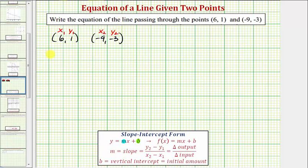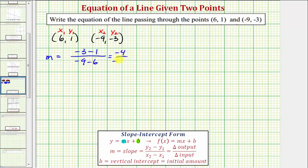Therefore, the slope of the line passing through these two points is going to be equal to the change of y divided by the change of x, or in this case, negative three minus one, divided by negative nine minus six. So simplifying, we have negative four divided by negative fifteen, but a negative divided by a negative is equal to a positive, so we know the slope is equal to positive four fifteenths.